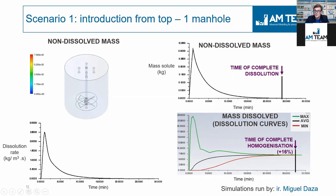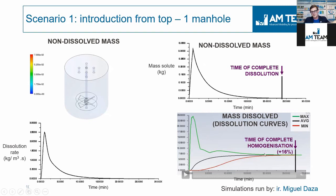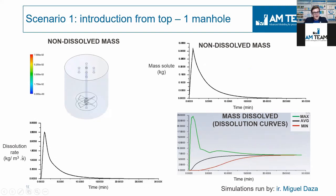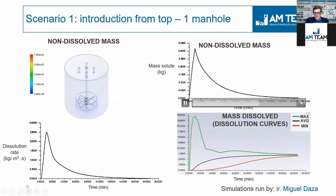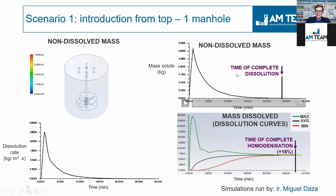What you see here are the dissolution curves: the amount of mass that has been dissolved. The black one is the real dissolution curve, or the average; the maximum concentration locally observed in the vessel; and the minimum, which is the red line, observed concentration in the vessel. If the minimum, maximum, and average coincide, you have complete homogenization. Here you also see the dissolution rates — the speed of dissolution, which is very high initially when nothing is dissolved yet. In this specific case, the time for complete homogenization was around 16% longer than the time for complete dissolution.